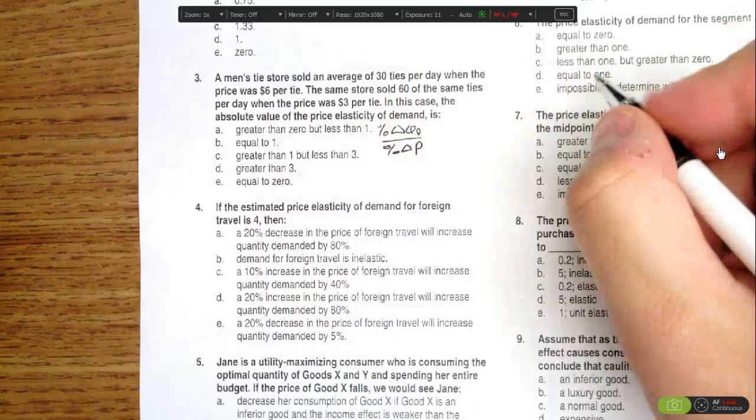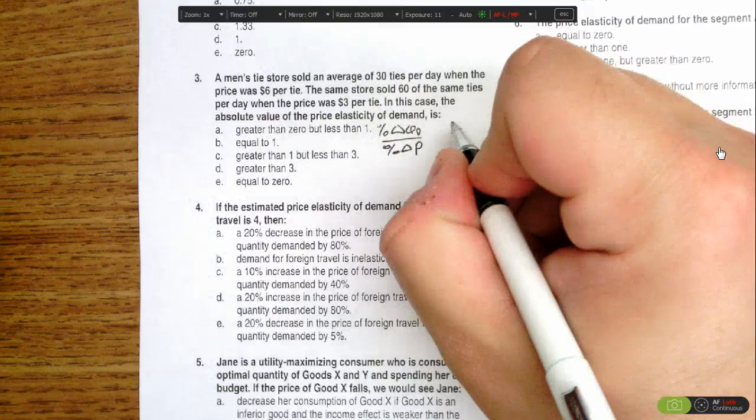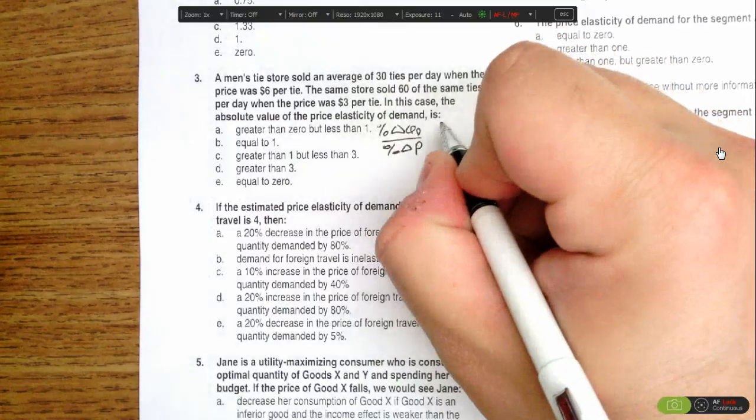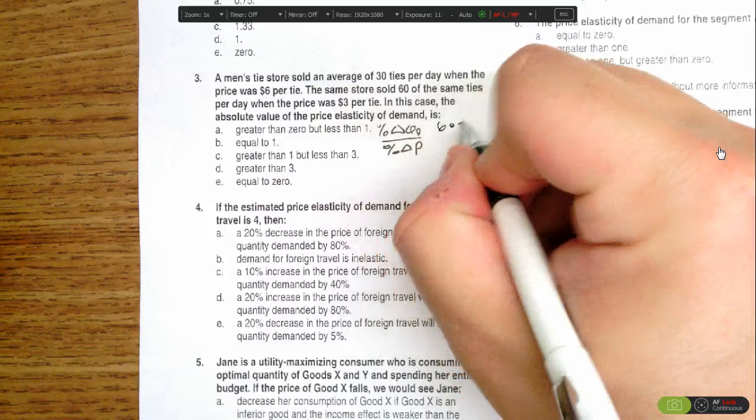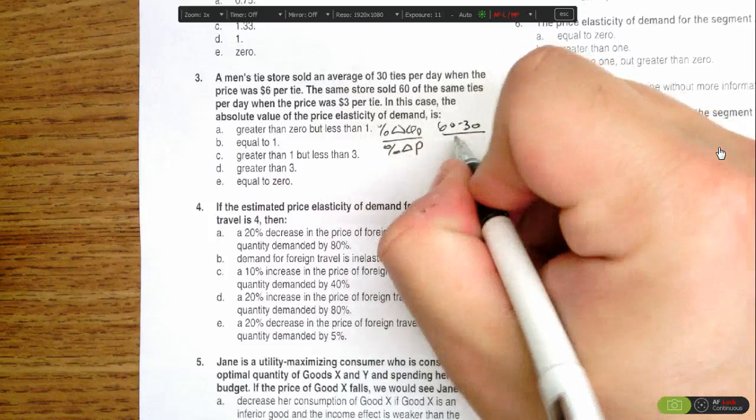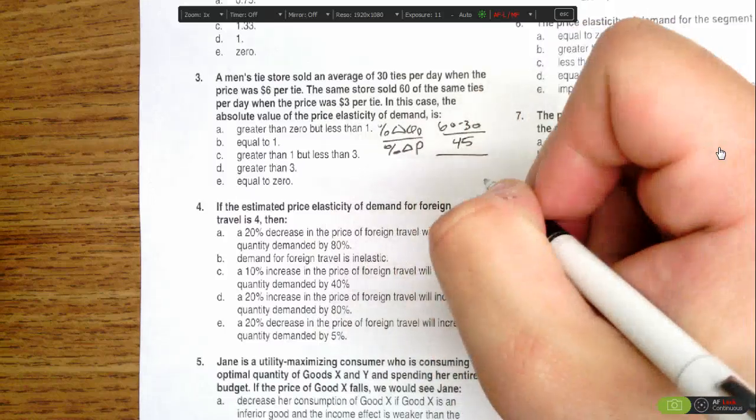The midpoint method would tell us it's the new quantity minus the old quantity, so 60 minus 30, divided by the average quantity, which would be 45, and that would get us our percent change in quantity demanded.